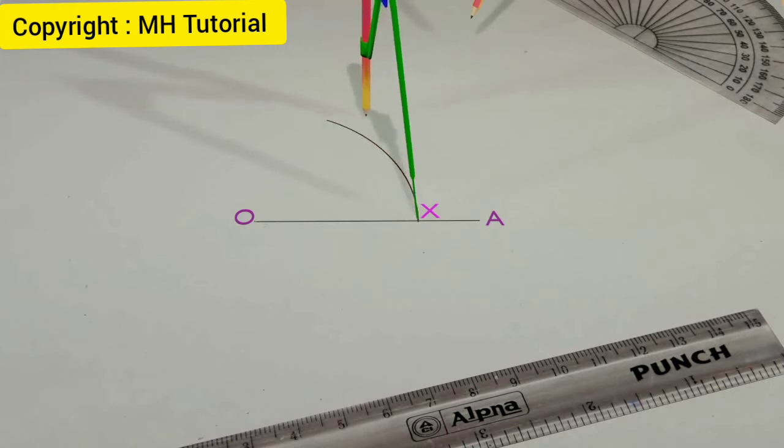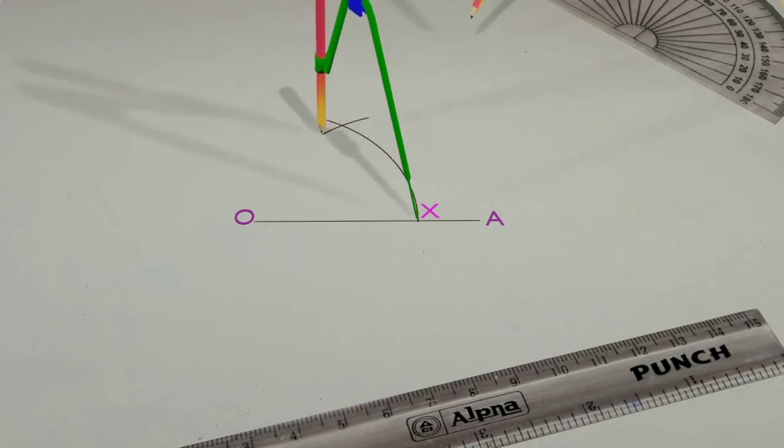Then another circle arc of the same radius is drawn with the spike placed at point X. It intersects the previous arc at the point Y.